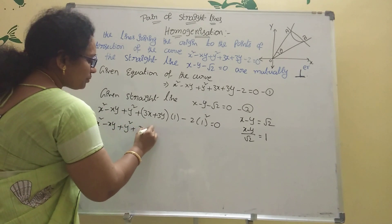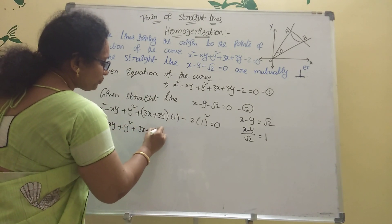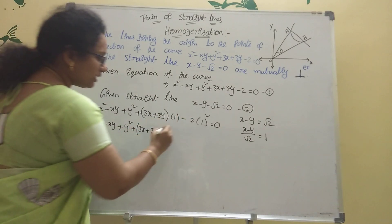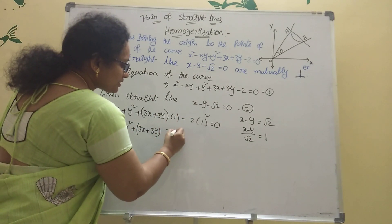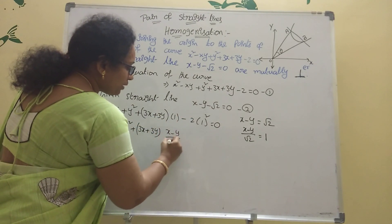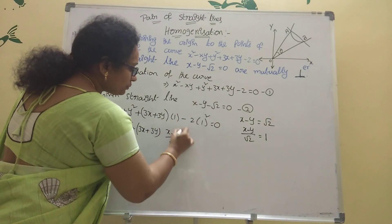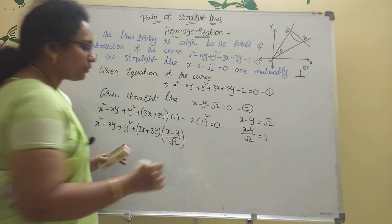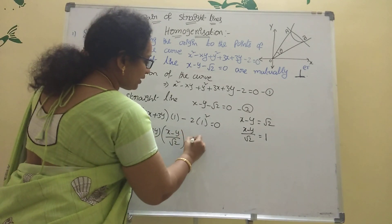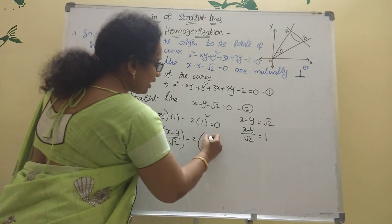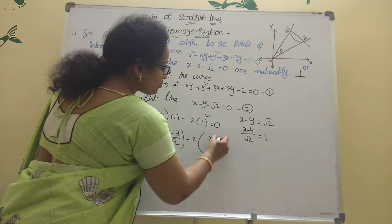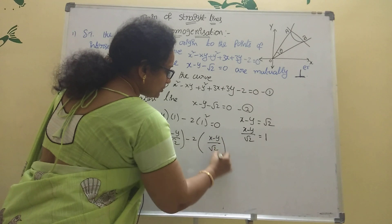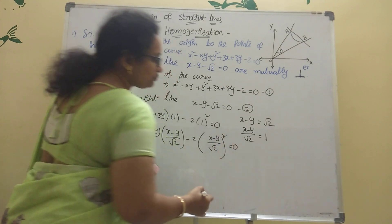Plus 3x plus 3y. What is 1 here? That is x minus y by root 2. Only simplification is important here. Minus 2 times x minus y by root 2, whole squared, equal to 0.